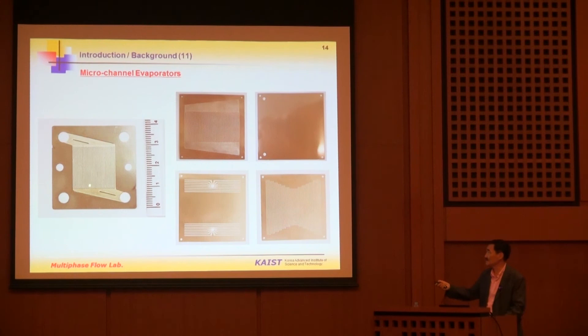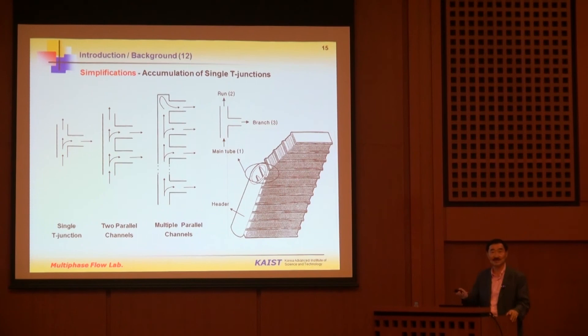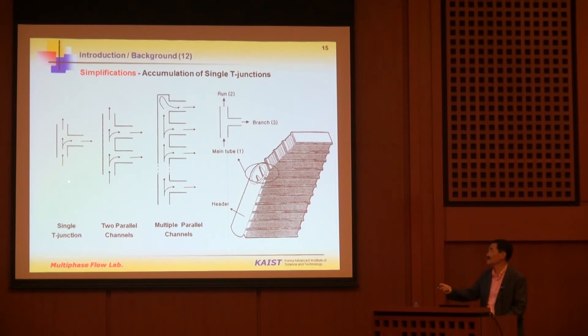For micro-channel designs, you have an inlet header, an outlet header, and channels of several hundreds or tens of microns. Flow maldistribution is quite important here. The header and channel assembly can be considered as an accumulation of single T-junctions — that is the elementary unit. Two-phase mixture comes in, part goes out through the side branch, and the rest continues to the run.